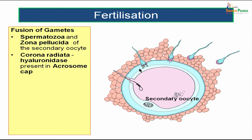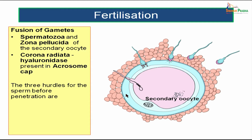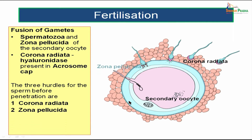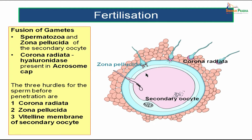There is an enzyme present at the acrosome of the sperm. The hyaluronidase released by the acrosome cap will remove the corona radiata so the sperm can easily penetrate and reach the zona pellucida. The three hurdles for the sperm just before penetration of the oocyte are: first, the corona radiata, the outermost layer; then the zona pellucida; and the third hurdle is the vitelline membrane of the secondary oocyte. The hyaluronidase in the acrosome cap lyses the corona radiata, and only after piercing the zona pellucida will the sperm reach the vitelline membrane of the secondary oocyte.